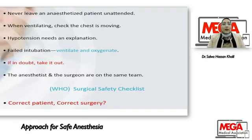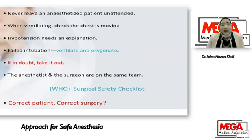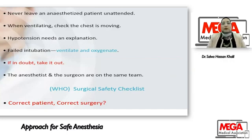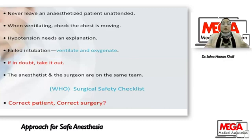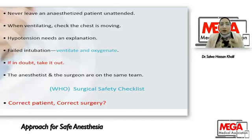Never leave your anesthetized patient unattended. When ventilating, check that the chest is moving. Hypotension needs explanation. If intubation fails, don't panic — ventilate and oxygenate. Your patient will not die from failed intubation; they will die from failed oxygenation and ventilation. If in doubt that your endotracheal tube is in, just take it out. The anesthetist and surgeon are not enemies — we are on the same team. Safety is only achieved when all team members support and communicate with each other properly.